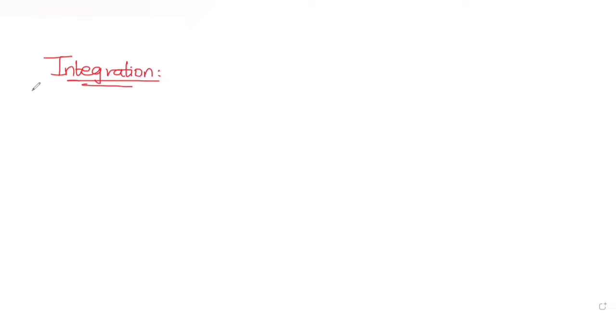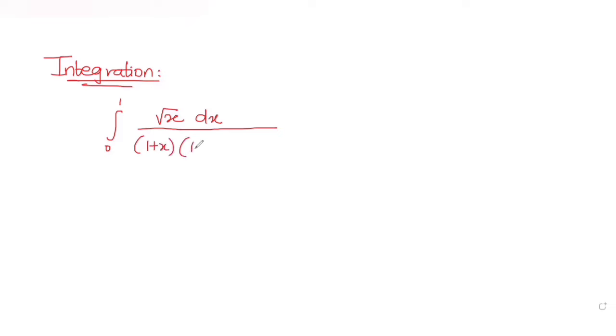Hi guys, I hope you are all doing well. Today's question is from the topic of integration. We need to find the value of the integral with limits from 0 to 1, with the expression √x dx divided by three expressions in the denominator: (1+x), (1+3x), and (3+x). We need to figure out which answer choice is correct.